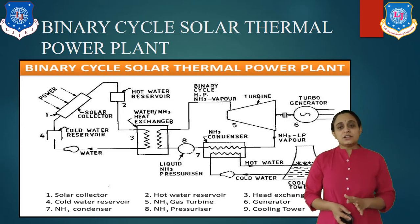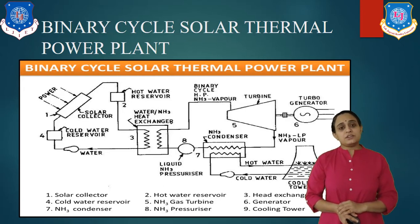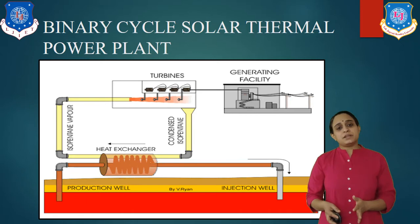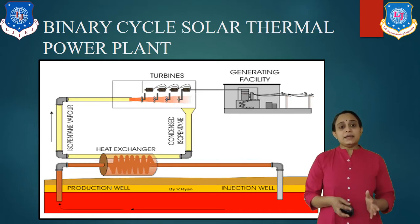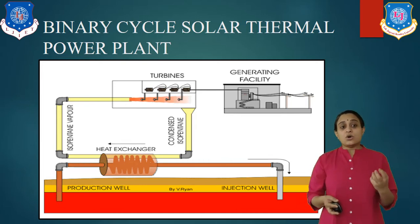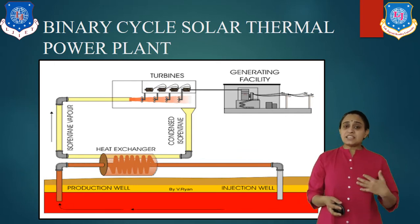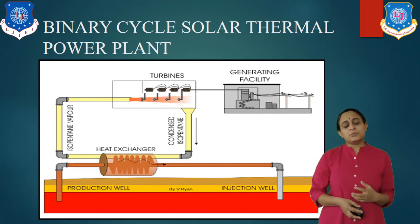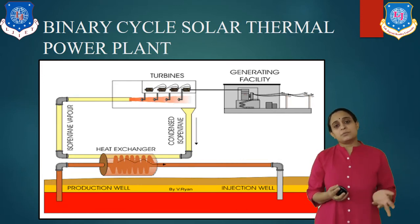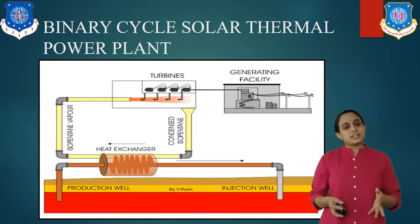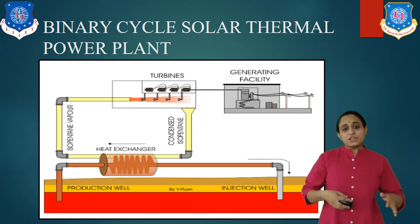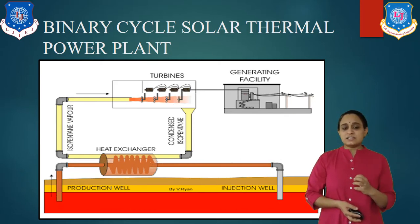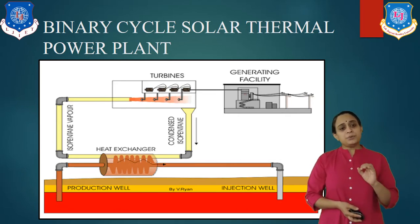Solar thermal collectors collect the solar energy and heat up the heat transport fluid. In the heat exchanger, as you see in this diagram, heat exchange takes place between water and the ABD working fluid. The ammonia gets vaporized and hot ammonia vapor drives the turbine rotor. The exhaust ammonia condenses in the condenser. The condensate is then pumped back to the heat exchanger. In general, just like a thermal power plant, we can generate electricity by using solar thermal plants.